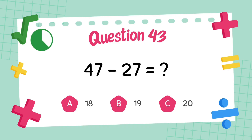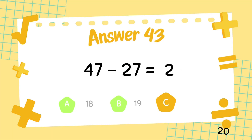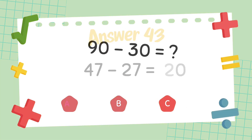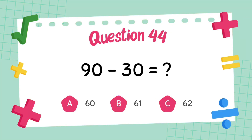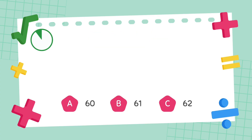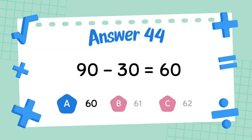What is 47 minus 27? The answer is 20. What is 90 minus 30? The answer is 60.